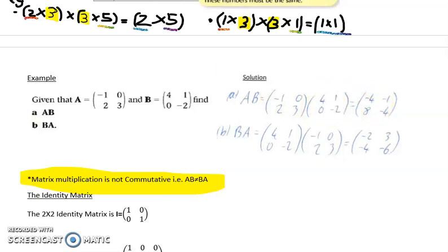The next one, first row second column. Do the first row times the second column. Minus 1 times 1 is minus 1, 0 times minus 2 is 0, giving minus 1. Second row first column: multiply second row by first column. 2 times 4 is 8, 3 times 0 is 0, giving 8. Second row second column: 2 times 1 is 2, 3 times minus 2 is minus 6, giving minus 4.